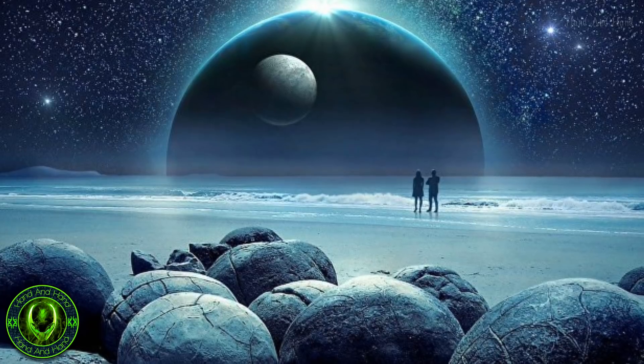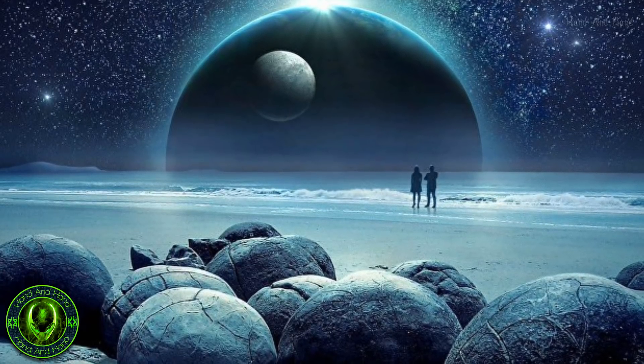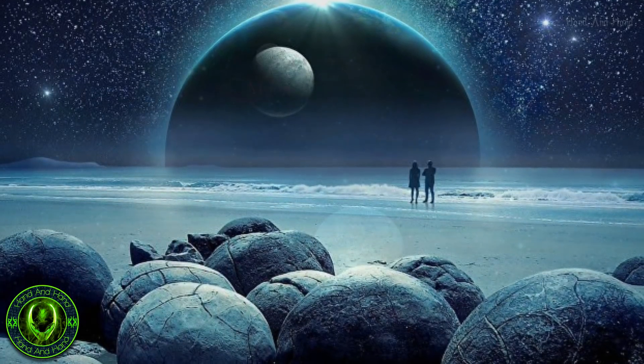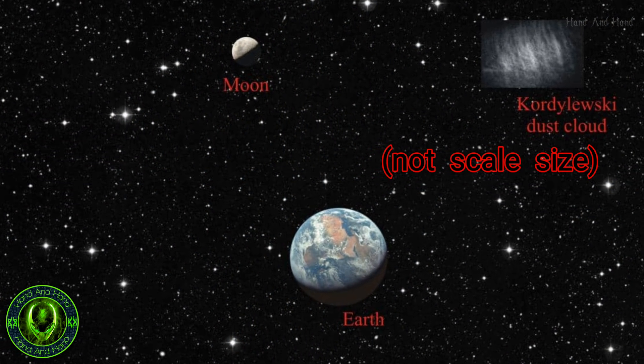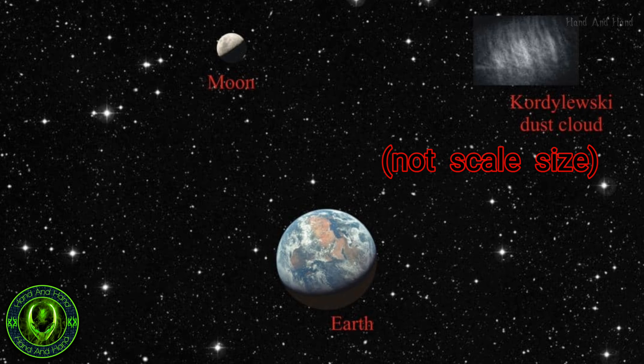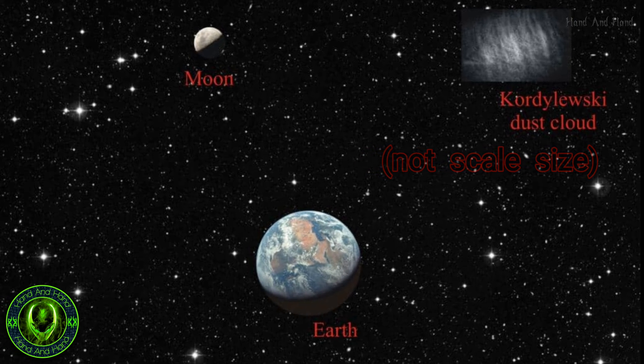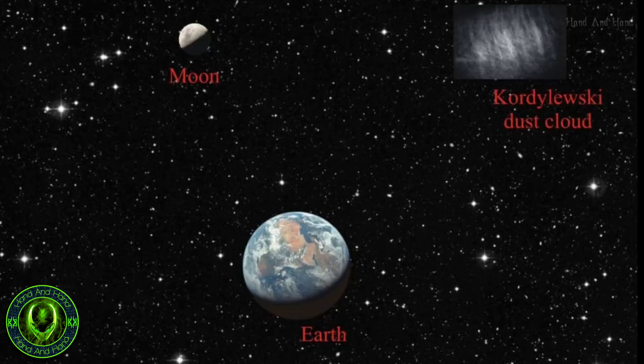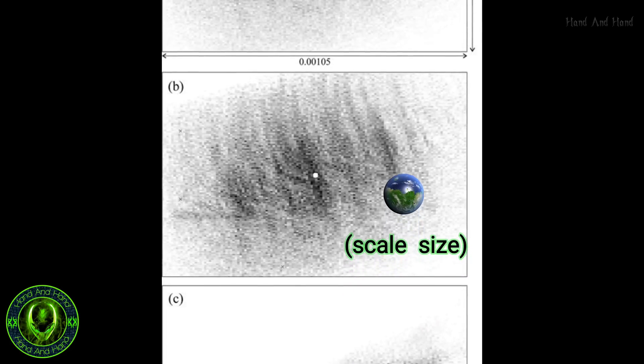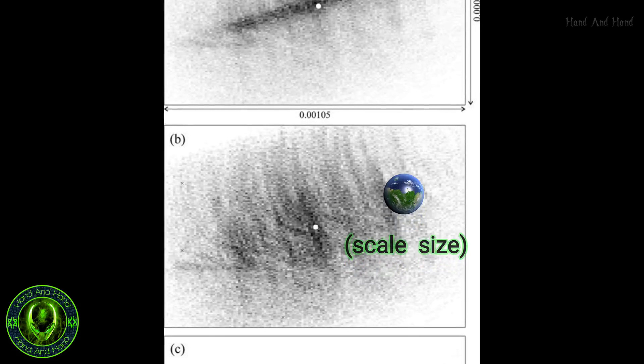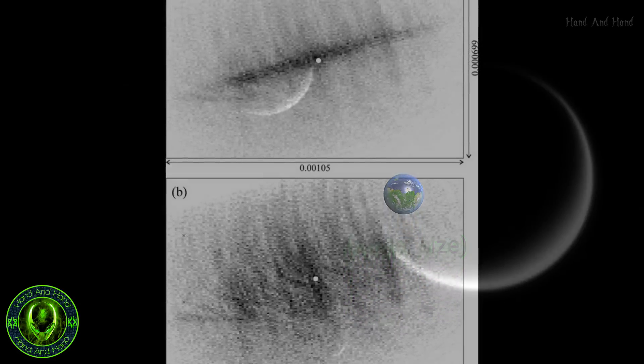According to the new findings, each Kordylewski cloud is about 15 by 10 degrees wide, or equal to 30 by 20 lunar disks in the night sky. This translates to an area in space about 65,000 by 45,000 miles in actual size, nearly nine times wider than Earth. The clouds themselves are enormous, but the individual particles that comprise them are estimated to measure just a micrometer across.